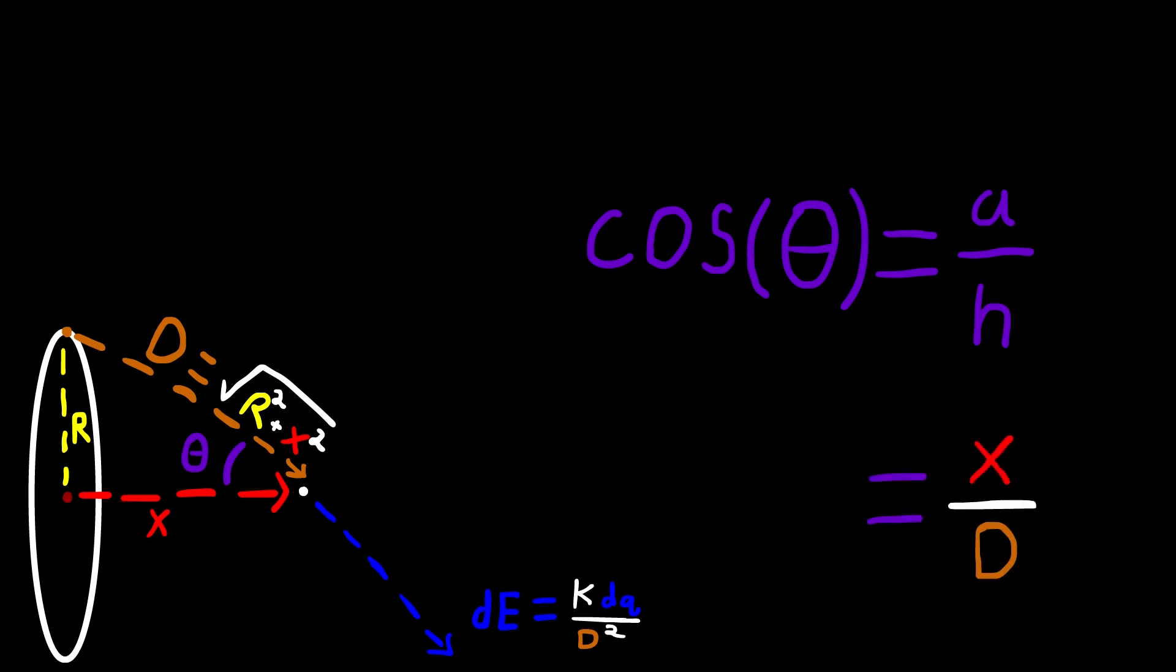Before we move on, why do we take the derivative of the energy? Well, we take the derivative to calculate a single point and use the integral to find the total charge of the ring.